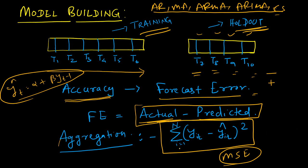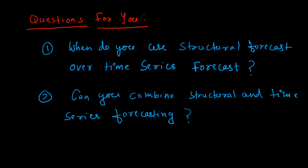You can use multiple modeling techniques — structural models with various algorithms, and time series models like AR, MA, ARMA, ARIMA, and exponential smoothing. Use all these models and see which one gives the least mean square error on the holdout sample. The model with the least MSE on the holdout sample is the final model.